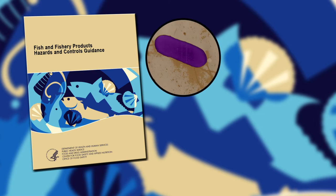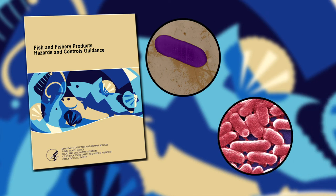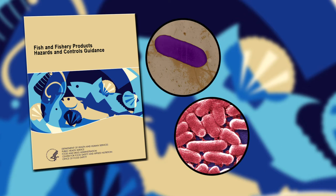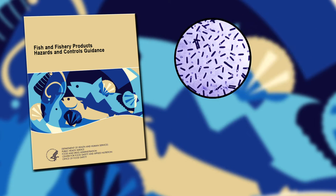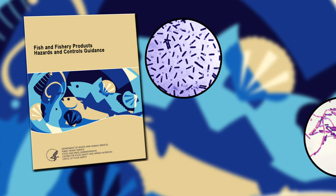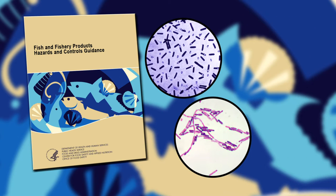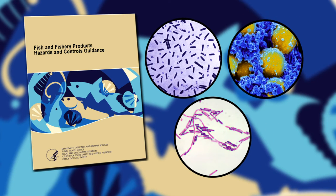Species such as Listeria monocytogenes, E. coli, and Salmonella grow in food and cause illness when an individual consumes the pathogenic cells. Other bacteria such as Clostridium botulinum, Bacillus cereus, and Staphylococcus aureus grow in food and produce toxins that cause illness when the toxins are consumed.